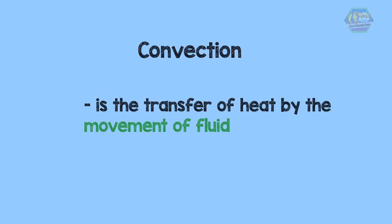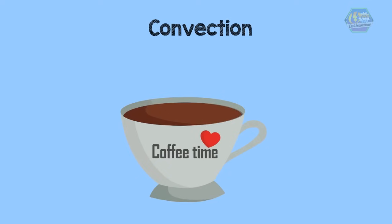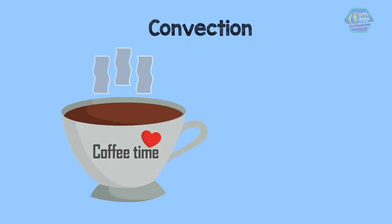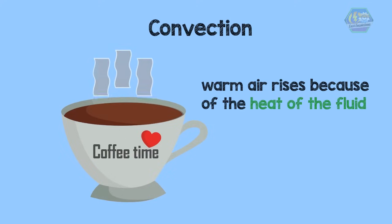Now let's go to convection. Convection is the transfer of heat by the movement of fluid. Hot beverages — hot coffee, to be specific — is another example of convection. The steam coming out of hot coffee in the form of warm air rises because of the heat of the fluid.